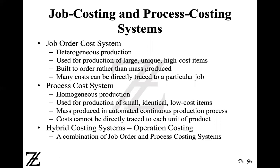On the other hand, in a process costing system the products are homogeneous in nature — they are identical and produced on a continuous basis. For example, a gallon of water is the same as another gallon of water, a gallon of gasoline is the same as another gallon of the same octane — 87, 89, or 91 octane. Similarly, each A4 size page is the same as another, and each pen or pencil is the same as another.